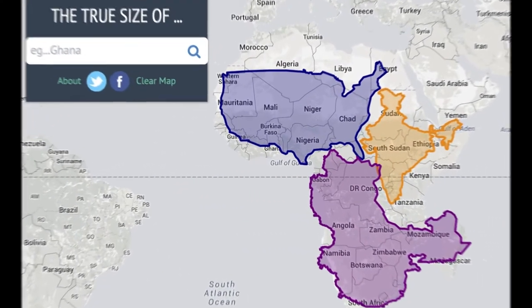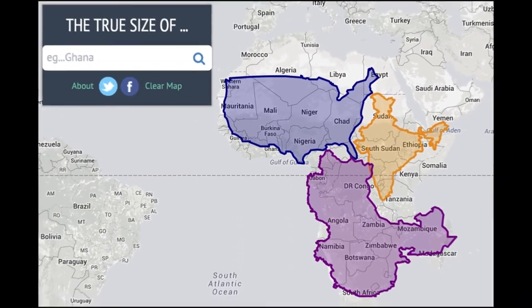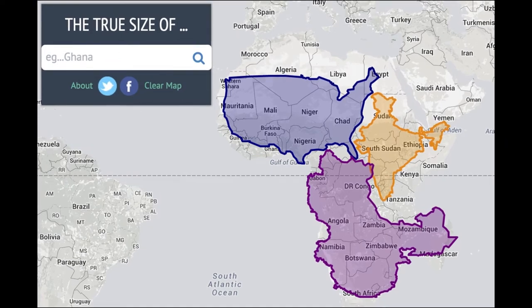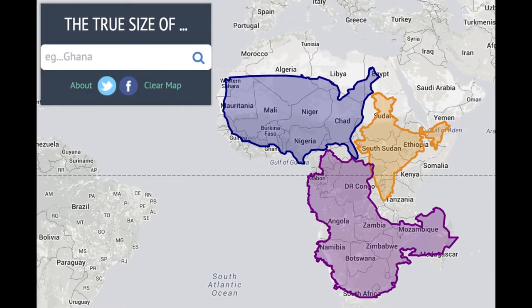The map also suggests that Scandinavian European countries are larger than India, whereas India is actually three times the size. And Google Maps, Bing, Yahoo, and even OpenStreetMap continue using some version or other of Mercator to display the world.